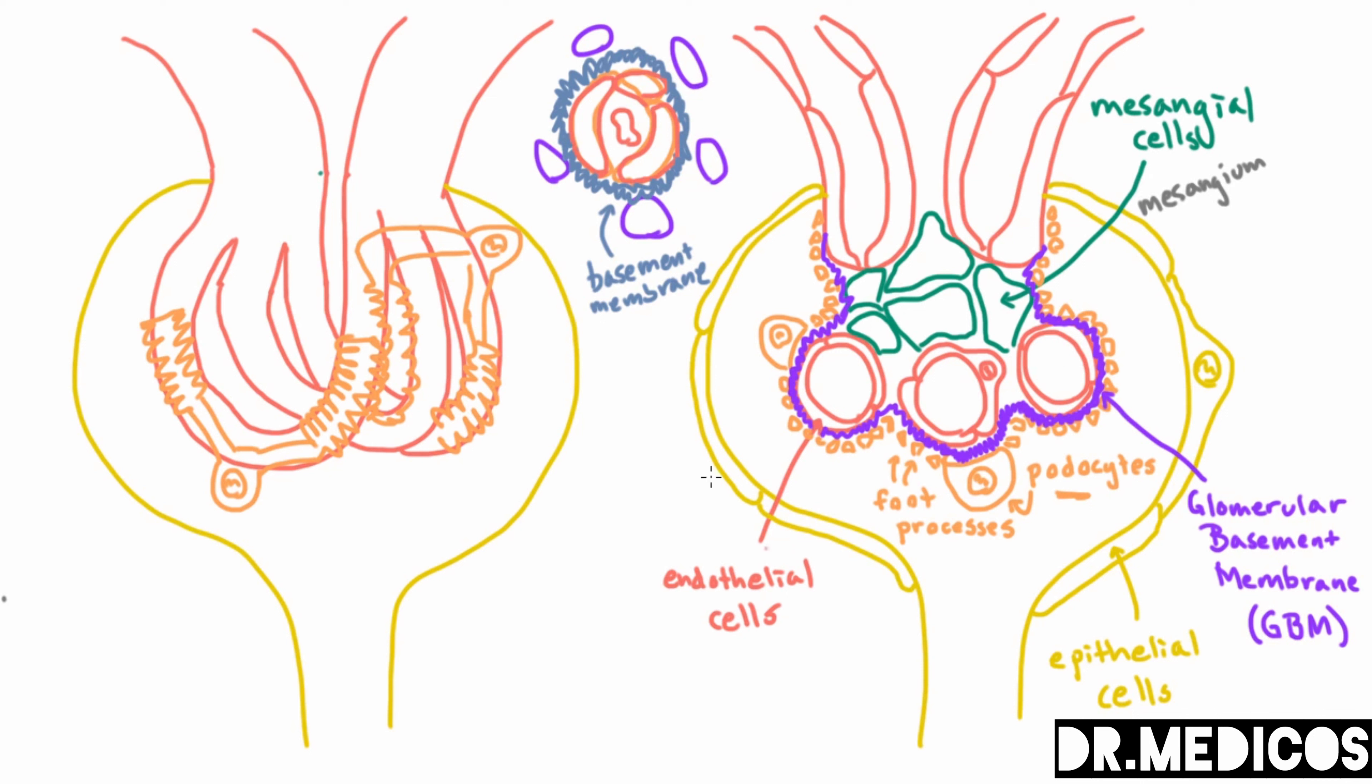Now this will take a while to stick. This anatomy is actually quite complicated and we're gonna talk about it more. But one important thing to realize here, one result of this structure is that for something to get from the capillary to Bowman's space, in other words for something to be filtered, it needs to go through three layers.